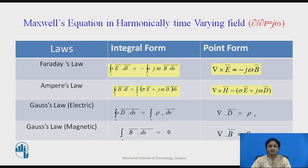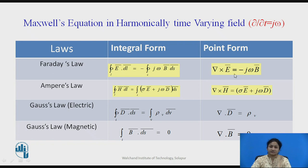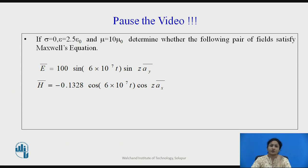This table represents Maxwell's equations in a static field. Now, for Maxwell's equations in a harmonically time-varying field, ∂/∂t is replaced by jω, where ω equals 2πf. After substituting ∂/∂t with jω throughout the general equations, these four equations are obtained. This table shows Maxwell's equations in a harmonically time-varying field.